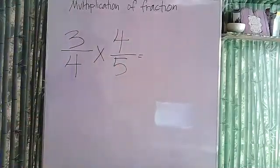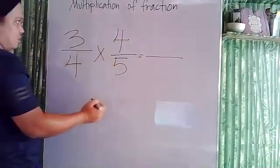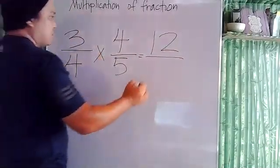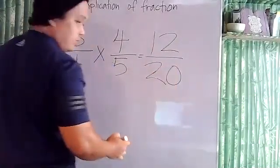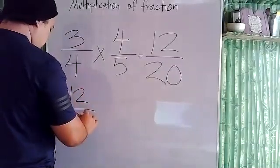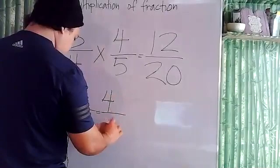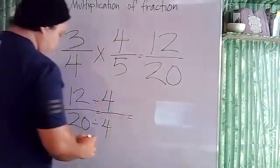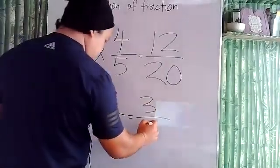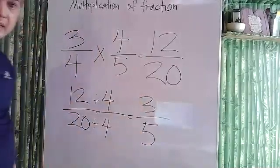When multiplying fractions, just multiply the numerator times the numerator and simplify if possible. That's the method. Divide them both by four to simplify. That's our final answer.